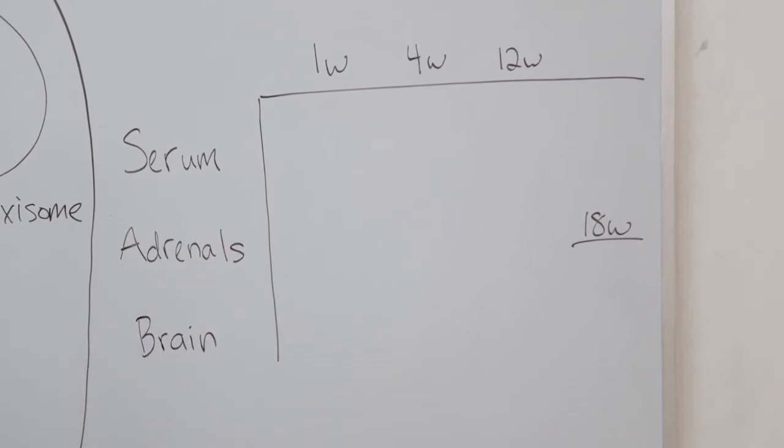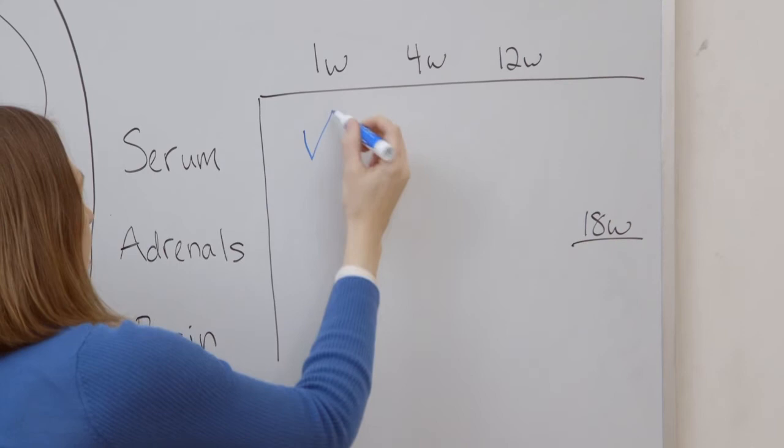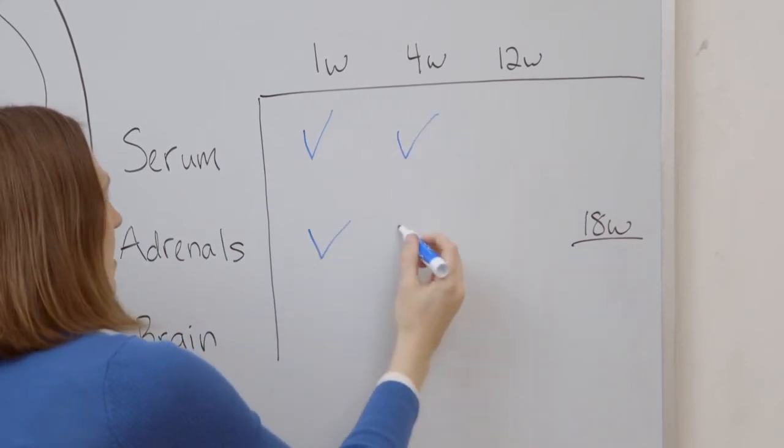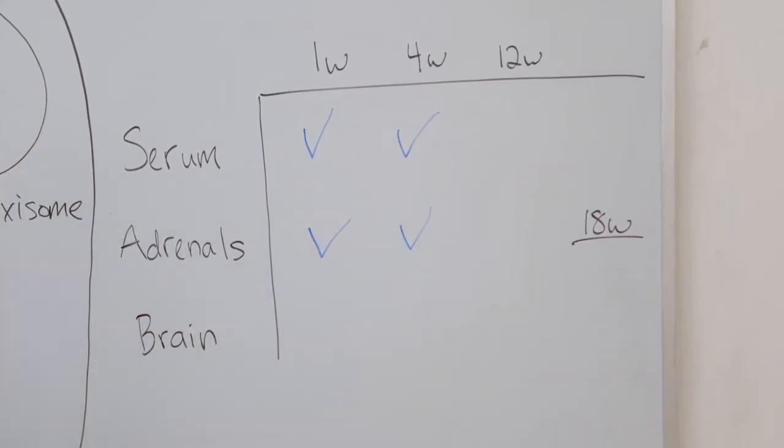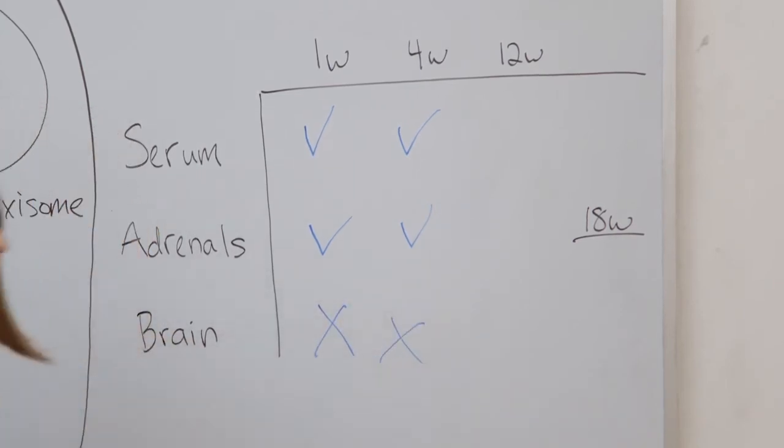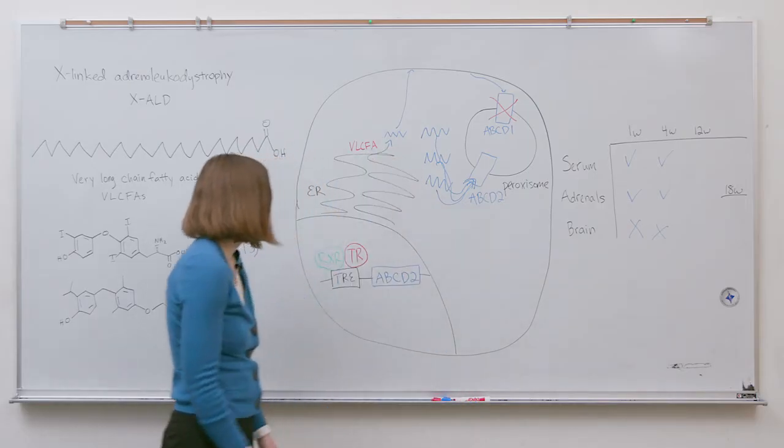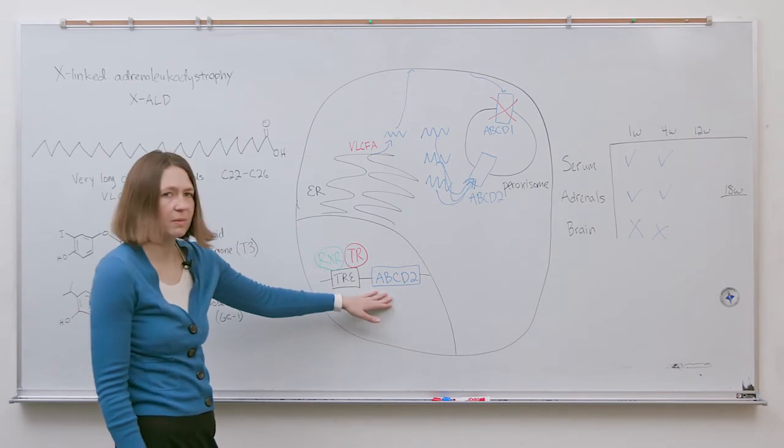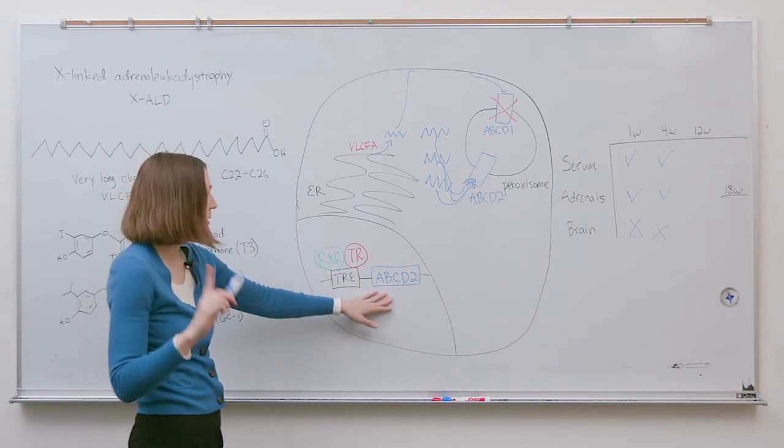What we observed was lowering of VLCFAs in serum and adrenal glands at both time points. However we did not observe any lowering in the brain and this was really surprising to us because we did see upregulation of ABCD2 in the brain after only one week of treatment.